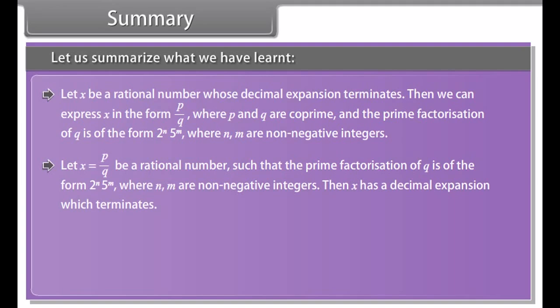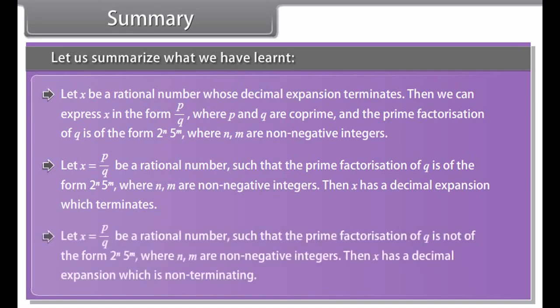Let X equal P upon Q be a rational number such that the prime factorization of Q is not of the form 2 raised to the power N × 5 raised to the power M, where N and M are non-negative integers. Then X has a decimal expansion which is non-terminating and recurring. For example, the decimal expansion of 17 upon 8, and similarly, the decimal expansion of 15 upon 1600 is 0.009375.